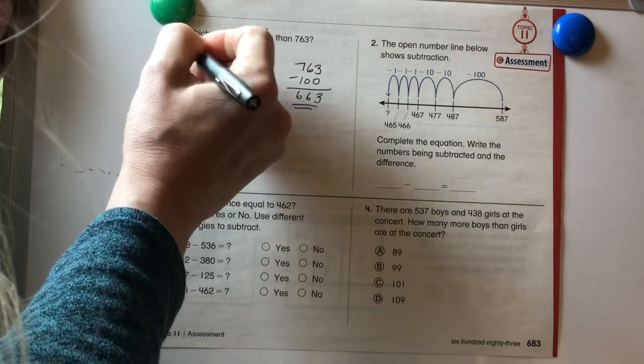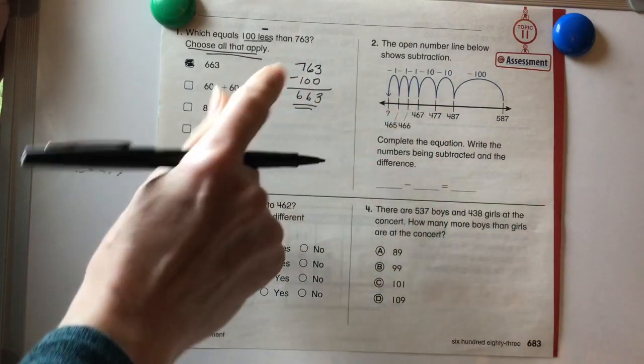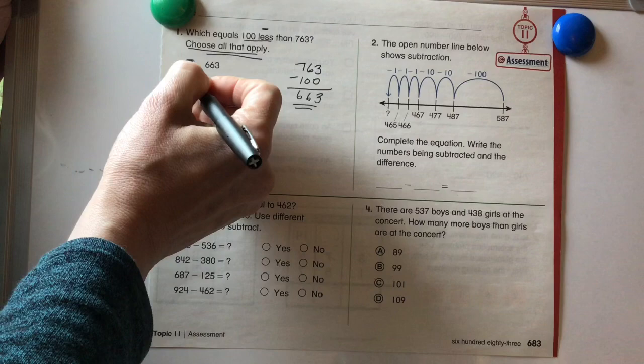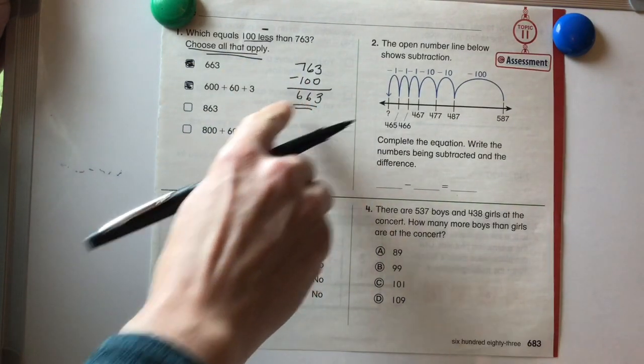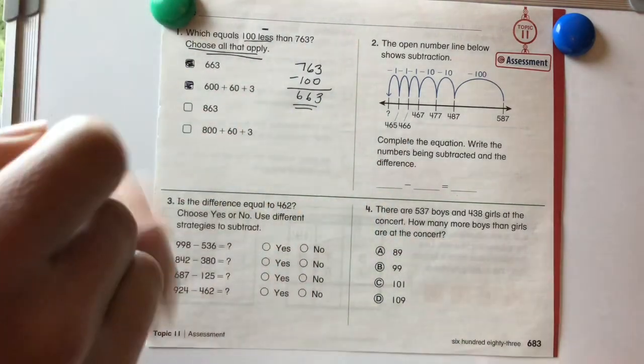But it says on here, choose all that apply. So let's take a look at what else might be equal to 663. Well, we've got 600 plus 60 plus 3. That's definitely equal to 663. 863, nope, not the same.